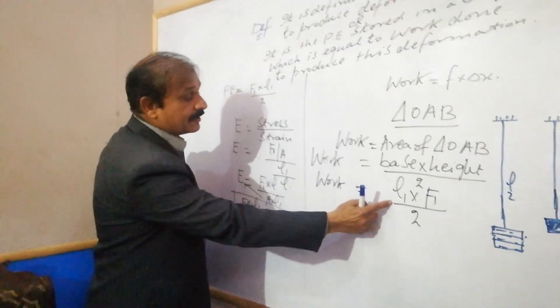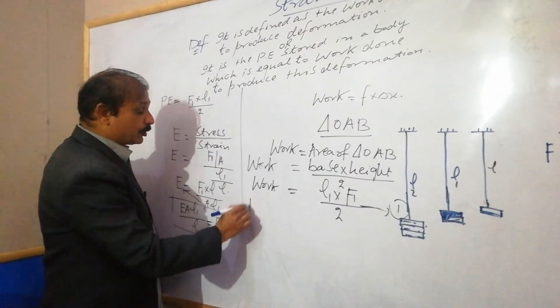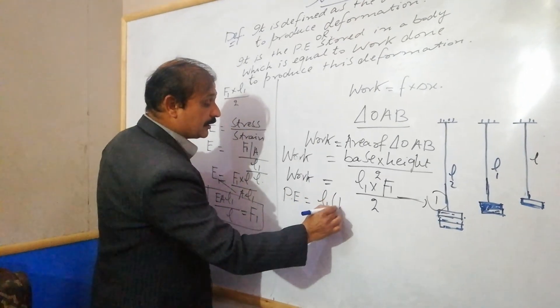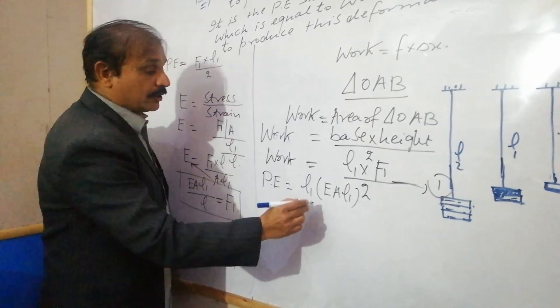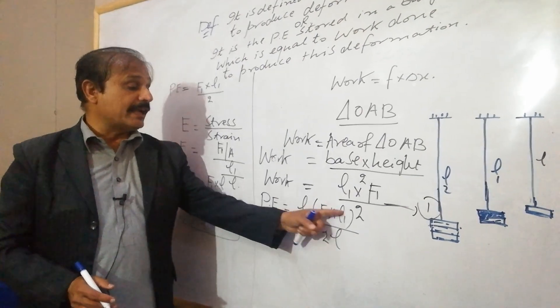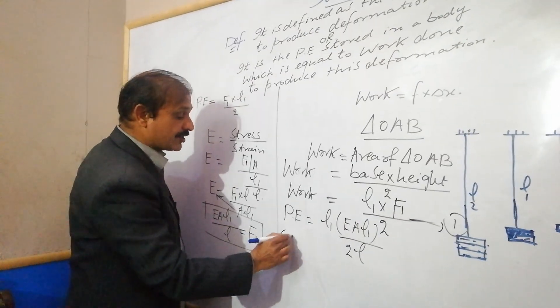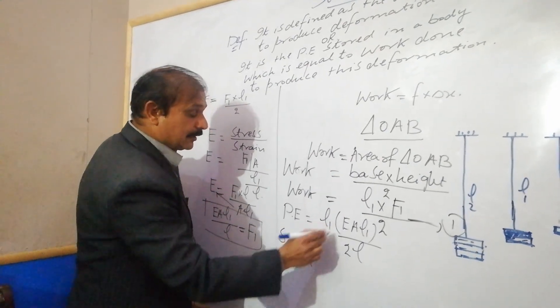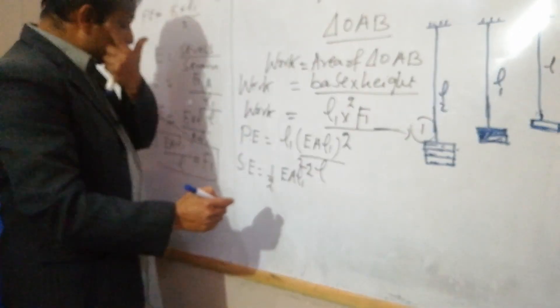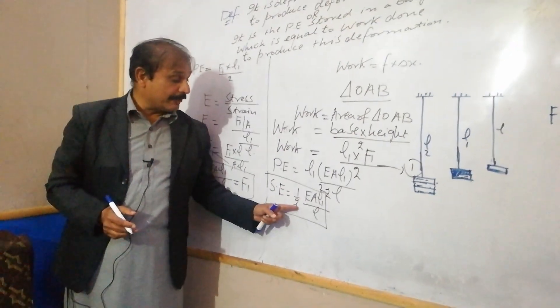We have the potential energy or strain energy equal to L1 times F1 divided by 2. The F1 value is E A L1 over L. Substituting, we get strain energy equals half E A L1 squared divided by L.